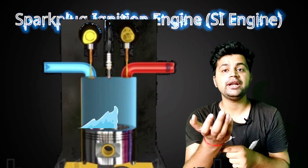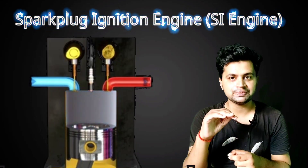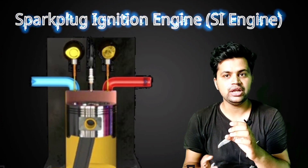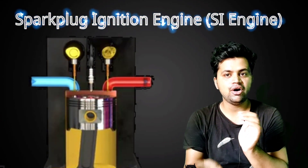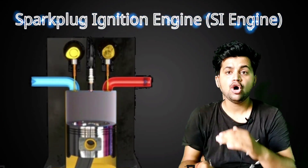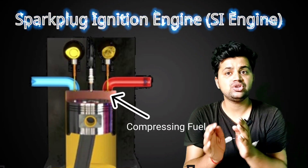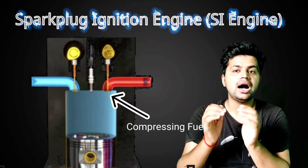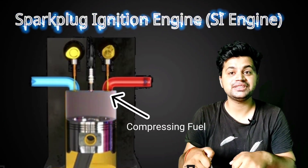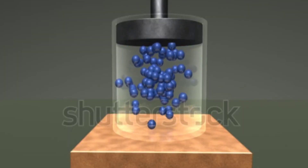In the second stroke, the piston moves from BDC to TDC — the inlet valve closes. The fuel is now sealed inside the cylinder and gets compressed. To give you a basic example: if you have a cycle pump, you can see that when you push the pump down, the air gets compressed. In the same way, the fuel mixture gets compressed inside the cylinder.